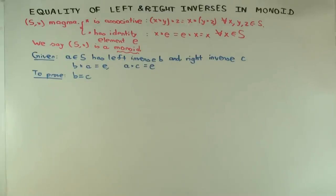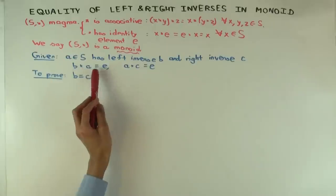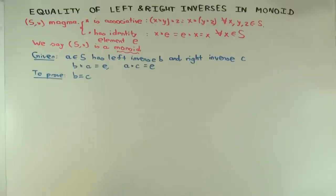So every element has a two-sided multiplicative inverse. Now, what we'll try to show is that for a monoid, if you have an element which has a left inverse and a right inverse, then the left and the right inverse have to be equal. So B is the left inverse of A if B times A is the identity, and C is the right inverse of A if A times C is the identity, and we want to prove that B equals C.